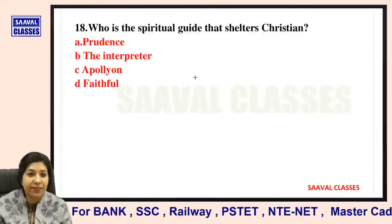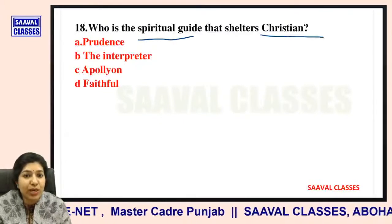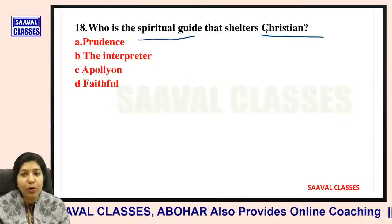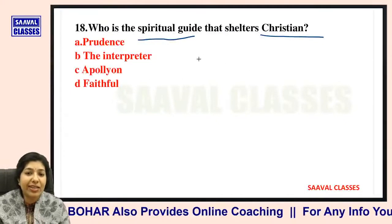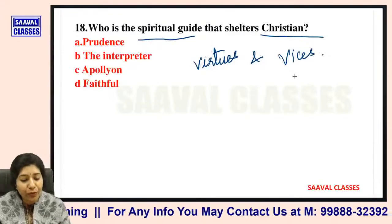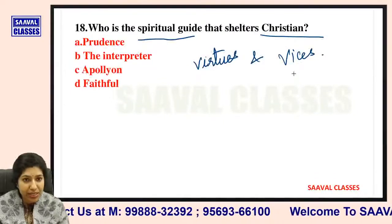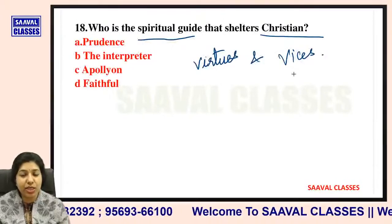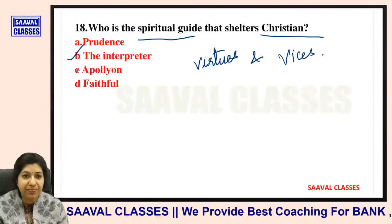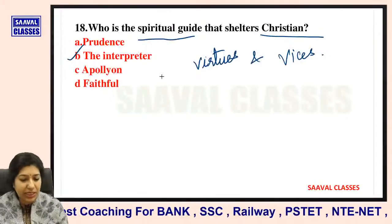Question number eighteen: Who is the spiritual guide that shelters Christian? Prudence, The Interpreter, Apollyon, or Faithful? In Pilgrim's Progress, all characters' names are based on virtues and vices — Hopeful, Thankful, Faithful. The spiritual guide who helps Christian is The Interpreter, who explains things and helps comprehend difficult situations.